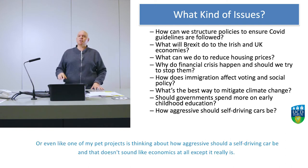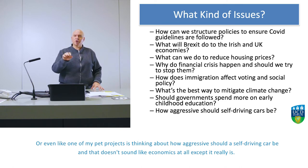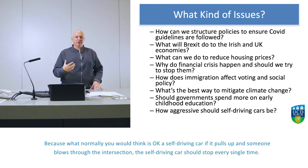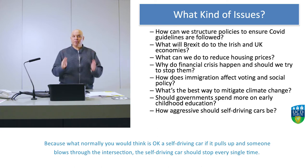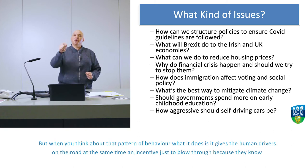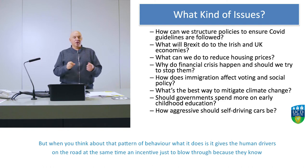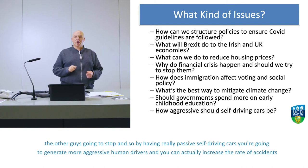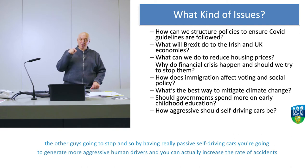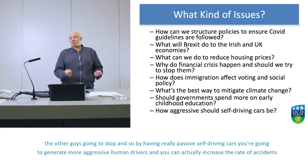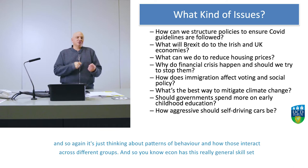One of my pet projects is thinking about how aggressive a self-driving car should be. That doesn't sound like economics at all, except it really is. You might think a self-driving car should stop every single time someone blows through an intersection. But that gives human drivers an incentive to blow through because they know the other car is going to stop. By having really passive self-driving cars, you generate more aggressive human drivers and can actually increase the rate of accidents. It's all about patterns of behavior and how they interact across different groups.